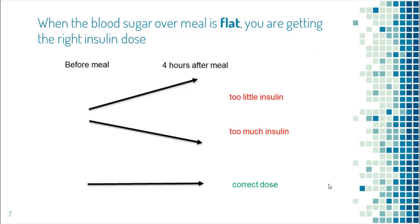In summary: if blood sugar goes up after a meal, you are getting too little insulin. If blood sugar goes down after a meal, you are getting too much insulin. The correct dose of short-acting insulin is the dose that keeps blood sugar flat after the meal.